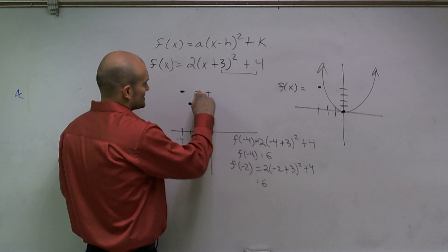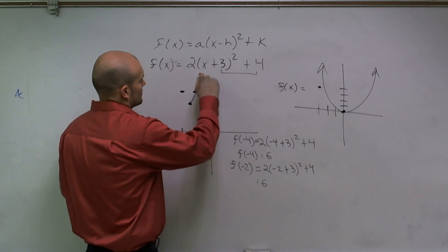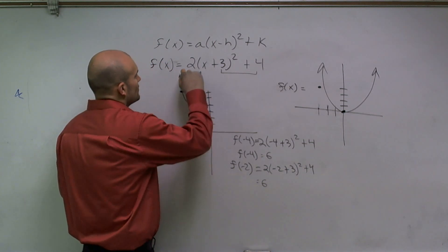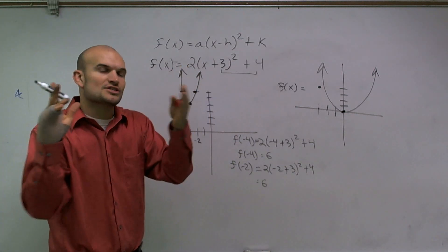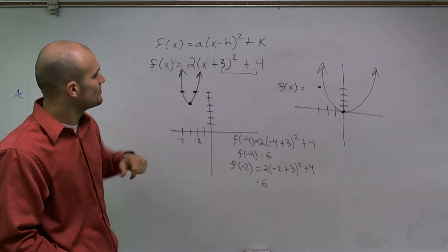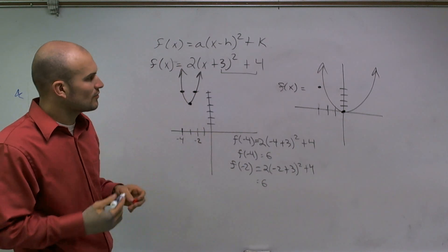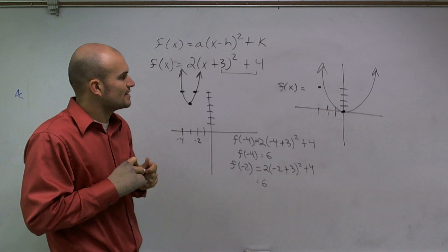So therefore, again, I'm going to have the exact same answer. And what we notice about this is what that 2 does is that actually gives us a horizontal compression or maybe a vertical stretch. So that is how you graph a parabola when given a certain set of transformations.